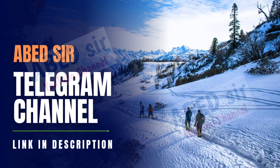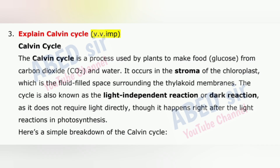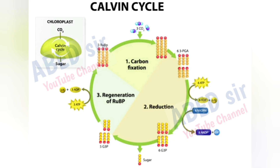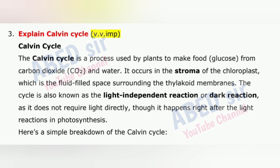Next important question is 3: Explain the Calvin Cycle. The Calvin Cycle is a process used by plants to make food (glucose) from carbon dioxide and water. It occurs in the stroma of the chloroplast, which is the fluid-filled space surrounding the thylakoid membranes. The cycle is also known as the light-independent reaction or dark reaction, as it does not require light directly, though it happens right after the light reactions in photosynthesis.